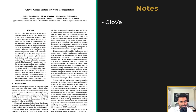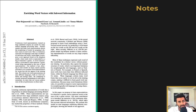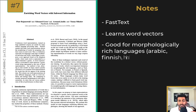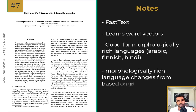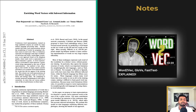A similar paper is GloVe — Global Vectors for Word Representation. This is similar to Word2Vec, but the vectors are formed using global co-occurrence of words rather than just local context information, in order to form the final dense word representations. Another similar paper is Enriching Word Vectors with Subword Information, which introduced FastText. FastText is also similar to Word2Vec, but is very useful in morphologically rich languages like Finnish, Arabic, and some Indian languages, where words can change their forms based on gender or preposition.